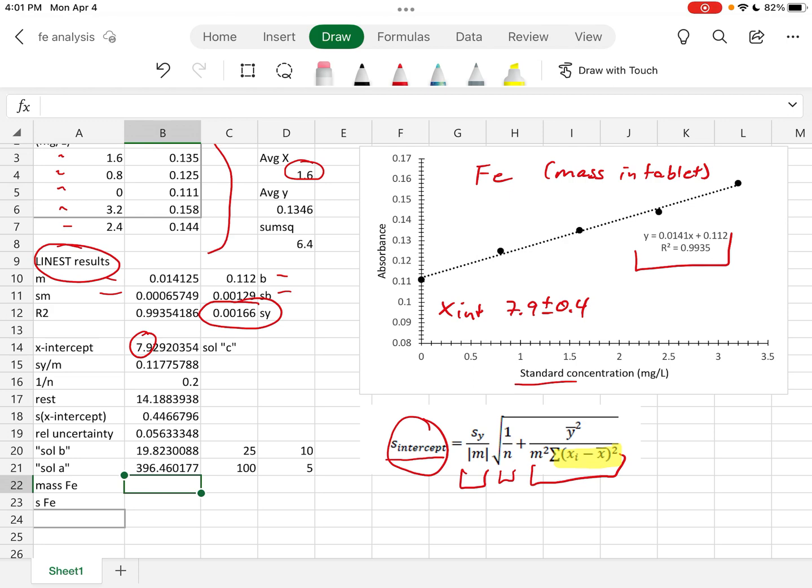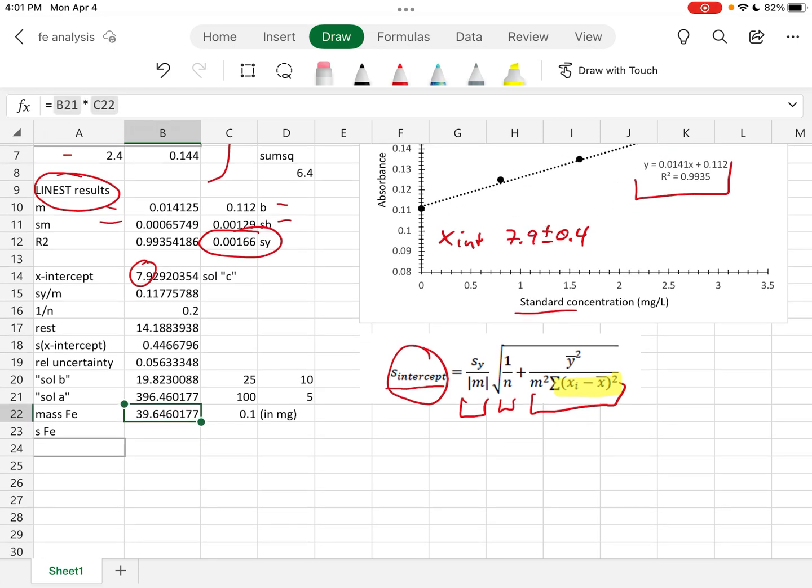Lastly we need to remember that the entire tablet was dissolved in 100 milliliters of solution which is 0.1 liters. So we take that concentration and we multiply that by the volume in liters and we get 39.6 milligrams, this unit is in milligrams. And we would compare that to the value that was on the bottle which was 37 milligrams.